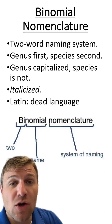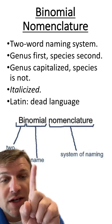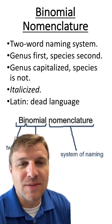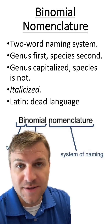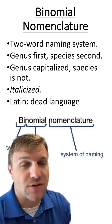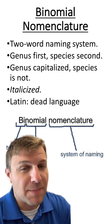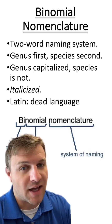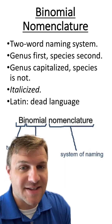If we break down the word binomial nomenclature, it means a two-name naming system. We're going to use something called the genus and species to classify an organism. The genus is always going to be first and the species is always going to be second. The genus is also capitalized while the species is not capitalized, and both words are going to be italicized.